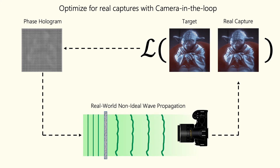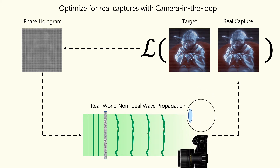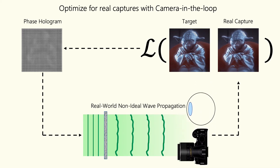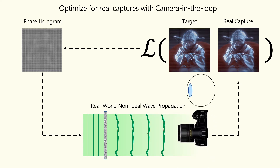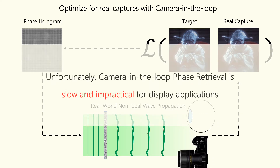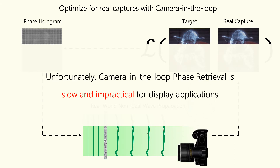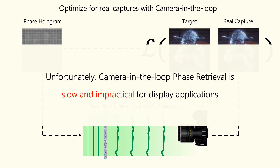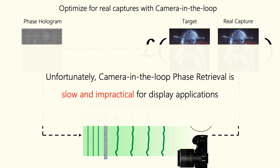Since the wave propagation model is unknown within a real holographic display, one way to compensate for real-world aberrations is to optimize for images coming directly out of the display. Instead of simulating the reconstructions, we can directly use images as captured by a camera in the optimization. This approach can eliminate many artifacts, but unfortunately it is slow and impractical, especially for display applications. Moreover, having a high-resolution camera that sees the images exactly as seen by the eyes increases the bulk of near-eye displays undesirably.